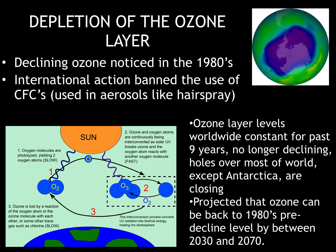As a wrap-up for this lecture, we're going to go in a more positive direction — humans can make a change. Our first example is the depletion of the ozone layer. Declining ozone layers were first noticed in the 1980s. International action banned the use of CFCs, which are used in aerosols like hairsprays. After that change, ozone layer levels remained constant worldwide for the past nine years. They are no longer declining, and holes over most of the world, except for Antarctica, are closing. It is projected that ozone can be back to 1980s pre-decline levels between 2030 and 2070.